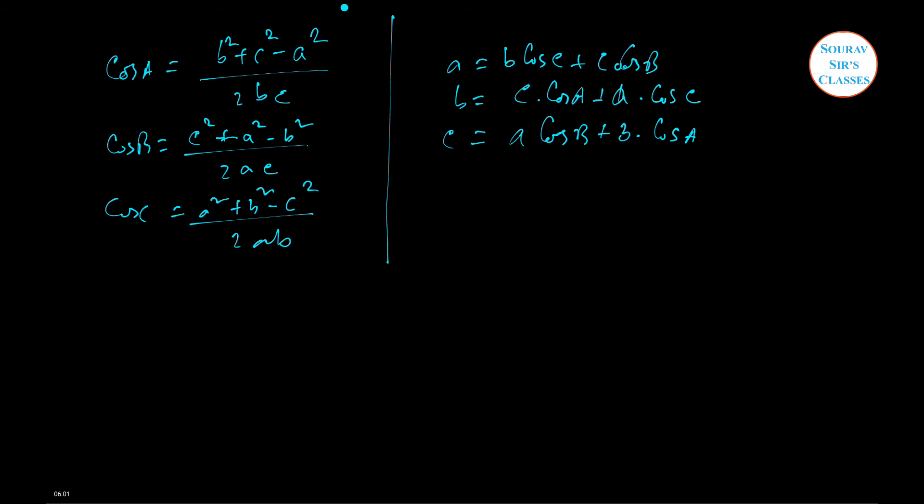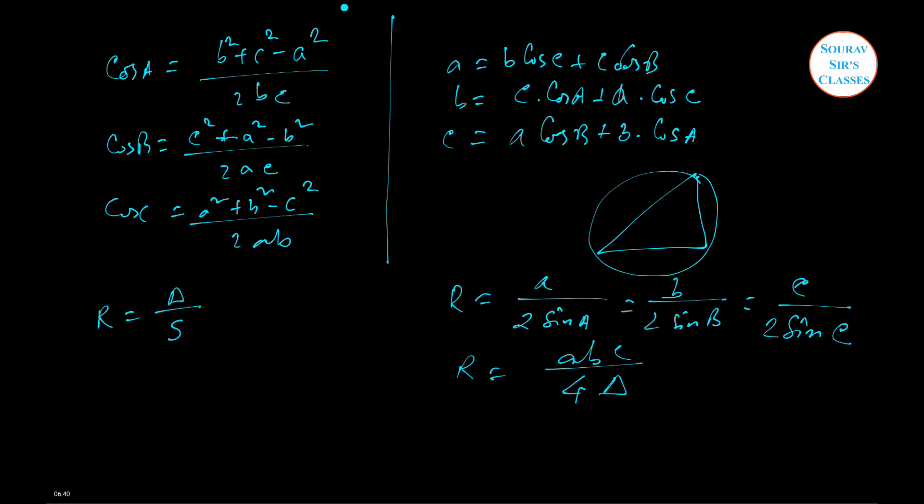For example, this is a circle and this is your triangle. In these kinds of cases, we can write R equals a by 2 sine A equals b by 2 sine B equals c by 2 sine C. And there's also abc by 4 delta, where delta signifies the area. There are some basic rules: small r equals delta by s, and r equals delta by s times sine A by 2 times sine B by 2 times sine C by 2.